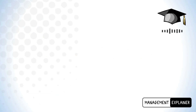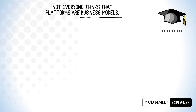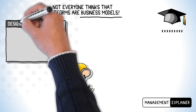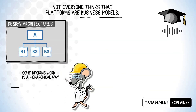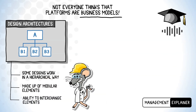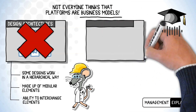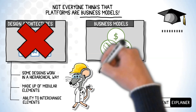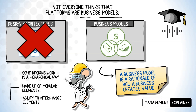Before we can go any further, we need to clear up something else first. Not everyone thinks that platforms are business models. Some people, especially designers and engineers, call certain design architectures platforms as well. Such architectures are based on the idea that some designs work in a hierarchical way and are made up of modular elements. Modularity is the ability to interchange these elements. This is, of course, not what is meant by platforms in this video. When tech entrepreneurs, and pretty much everyone else for that matter, talk about platforms, they refer to some business models as platforms. A business model is a rationale of how a business creates value for its customers, and, unsurprisingly, focuses on commercial things. In essence, business models capture how the business understands itself and what it does for its customers.